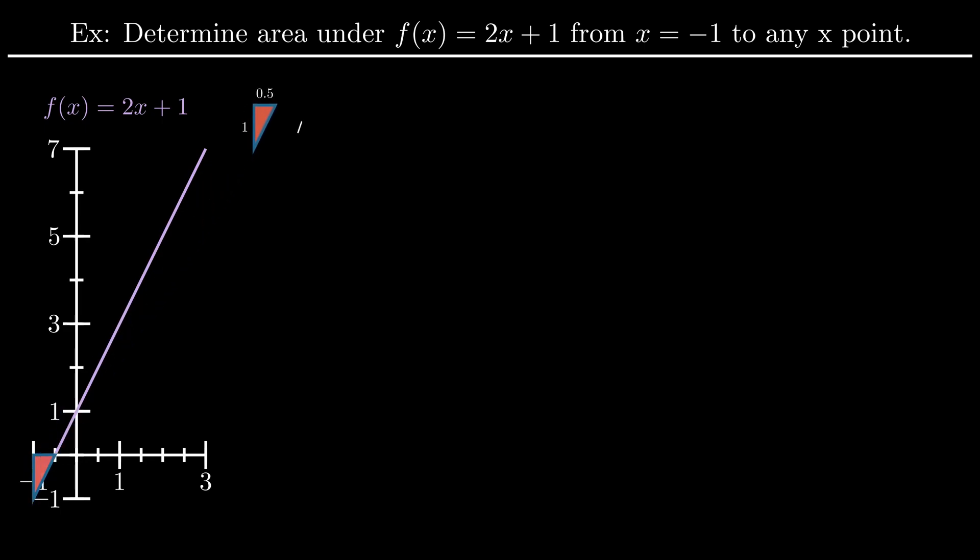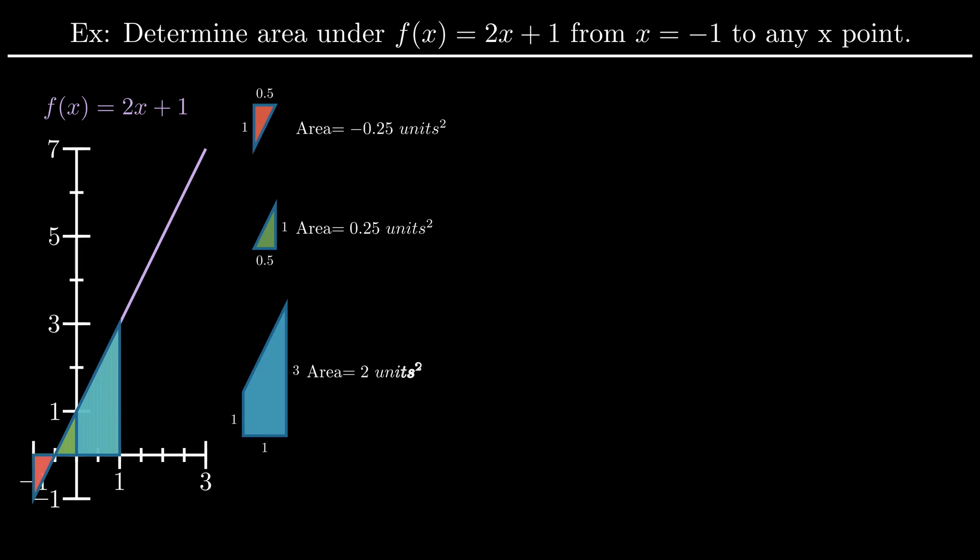When we consider x equals negative 1 to x equals 0, two identical triangles can be pulled out, one with a negative area since it's under the x-axis, and one with a positive area. Continuing up to x equals 1, we can pull out a trapezium that has an area of 2 units squared. And after this, the area will continue to grow at a relatively fast rate.